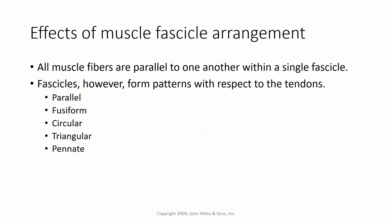Looking at the effects of muscle fascicle arrangement: all muscle fibers are parallel to one another within a single fascicle, but fascicles can form different patterns with respect to the tendons. These patterns include parallel, fusiform, circular, triangular, and pennate shapes.